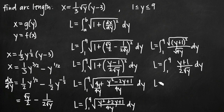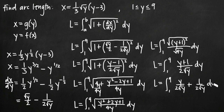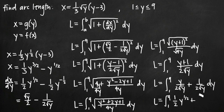We split the fraction into two parts: the integral from 1 to 9 of y over 2 root y plus 1 over 2 root y, dy. Simplifying: y divided by root y leaves root y, so the first term is one-half times y to the one-half, and the second term is one-half times y to the negative one-half. So we integrate the sum of these two terms from 1 to 9.